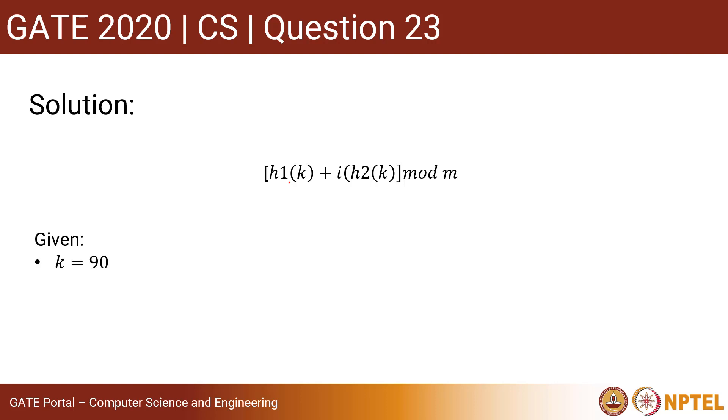In the question, it is given that k = 90, m = 23 (the hash table size), h1(k) is given as k mod 23, and h2(k) is given by 1 + (k mod 19).